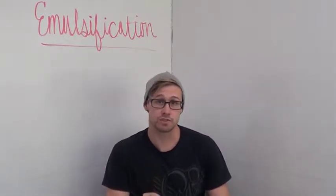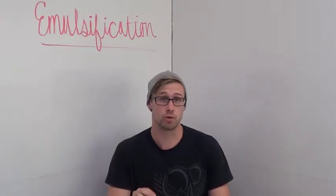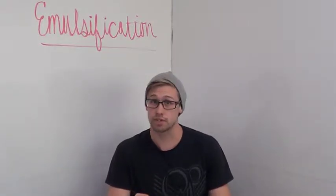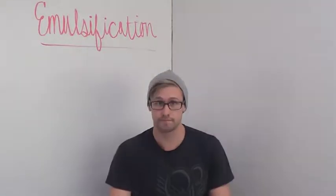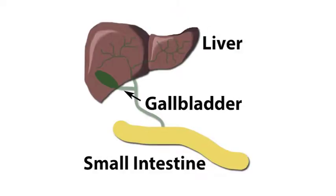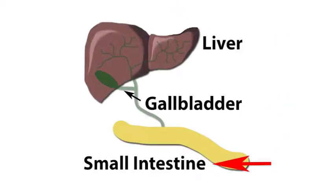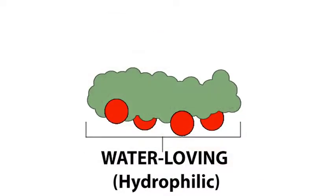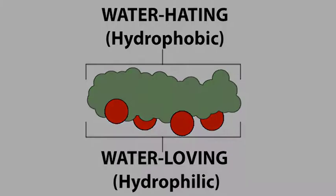Remember that for our ancestors, being able to digest and absorb energy-rich macronutrients was essential to survival. Bile is a molecule that is created in the liver and released by the gallbladder into the small intestine. Bile contains water-loving and water-hating parts within its structure.